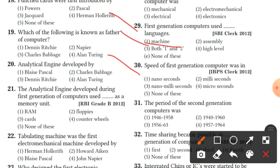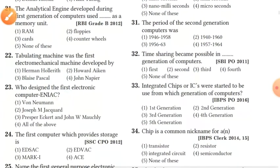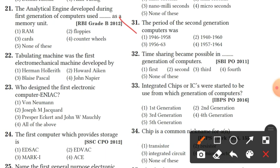Question 29: first generation computers used machine language. Option 1 is the right answer. Question 30: the speed of first generation computers was in microseconds. Option 4 is the right answer. Question 31: the period of second generation computers was 1956 to 1963. Option 3 is the right answer.